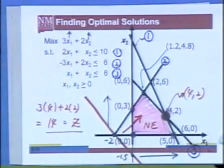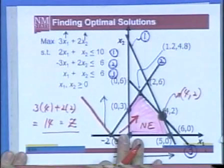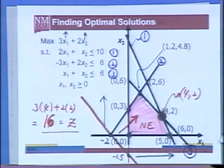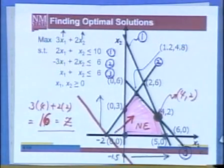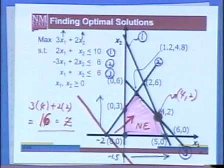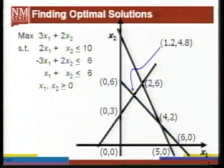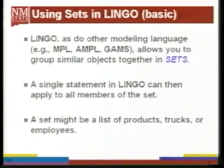The optimal objective function value is confirmed. One of the homework problems involves this graphical method. I believe everyone knows how to do this now. Let's move on and talk about LINGO sets.